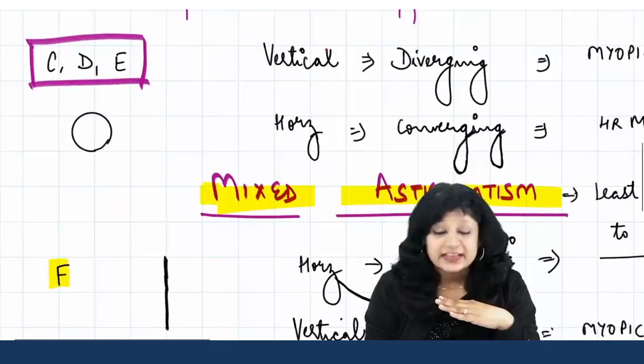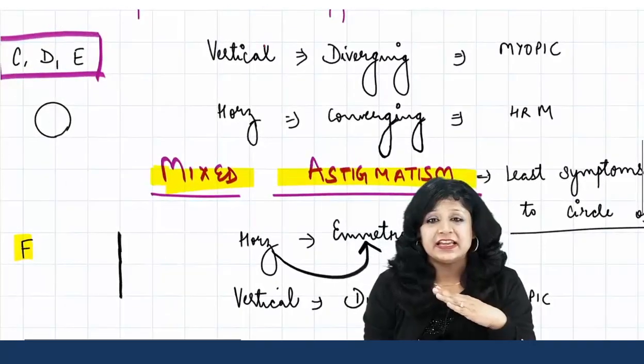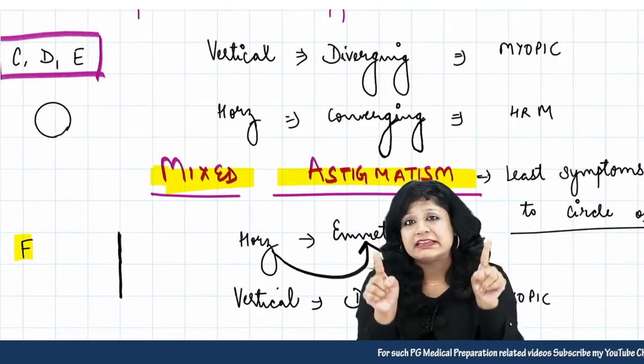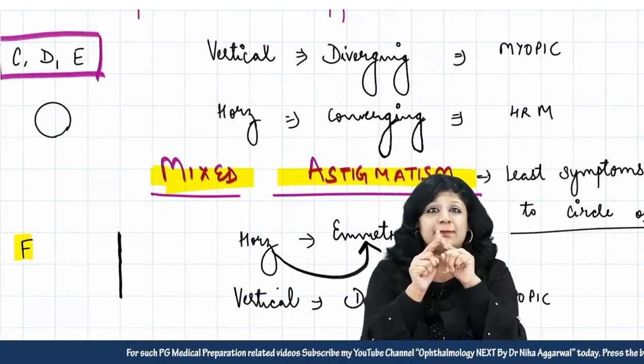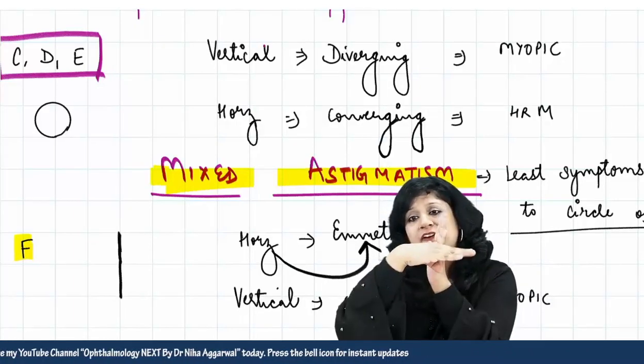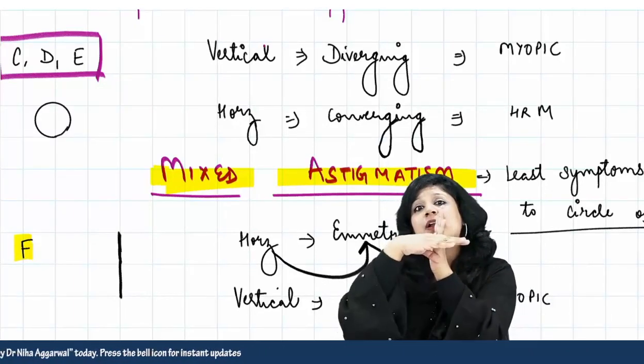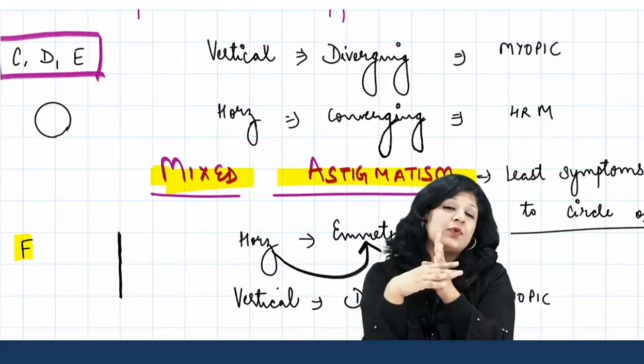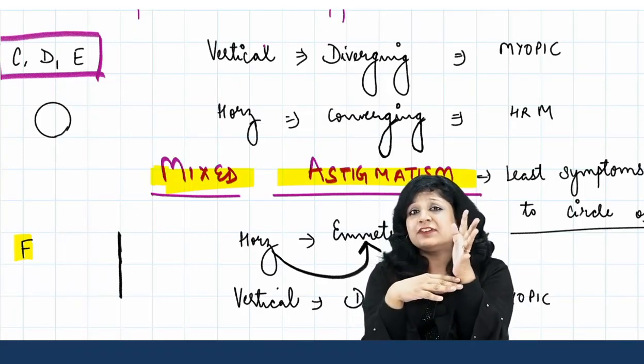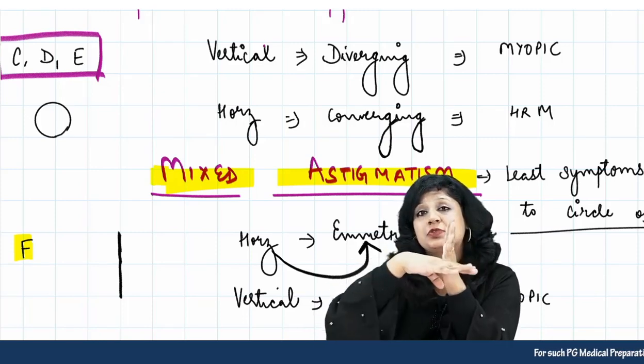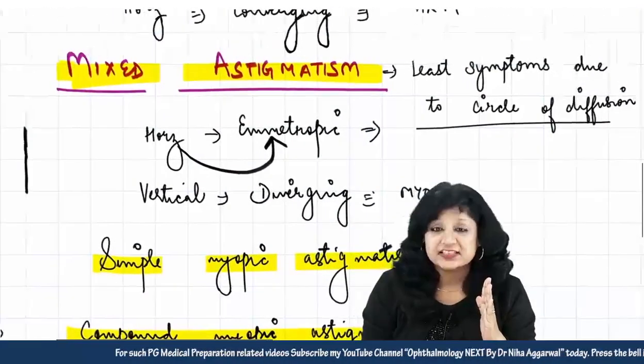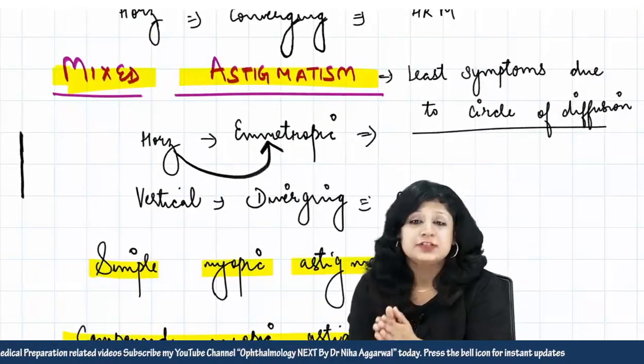Now if you look at points C, D, and E, especially at point D, what is happening? You are getting a perfect sphere. The vertical rays are diverging and horizontal rays are converging. So you are getting equal radius or equal diameter, and that is why you are getting a perfect circle. The amount of diverging rays in the vertical meridian is equal to the amount of converging rays in the horizontal meridian. So you are getting mixed astigmatism. The circle of diffusion is formed.